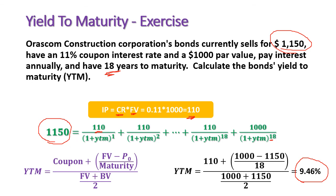This means if you buy this bond today at 1,150 and the issuing company pays all promised coupon payments and repays the face value at maturity, you will have achieved a realized rate of return of 9.46% per year.